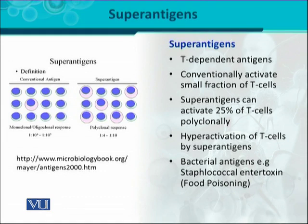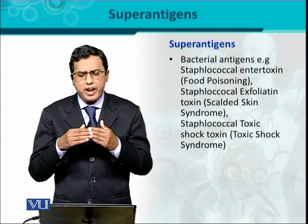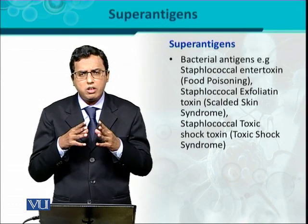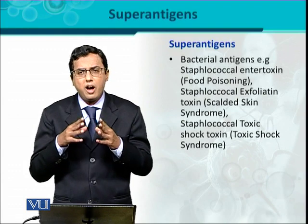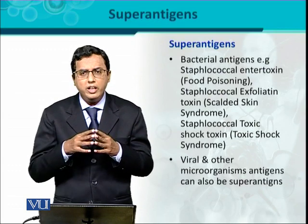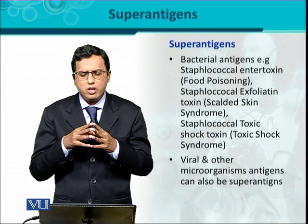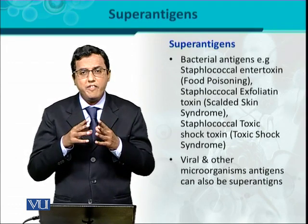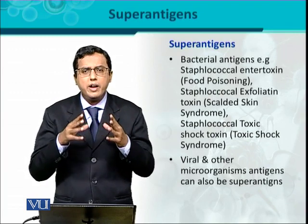Other important examples from Staphylococcus aureus include exfoliating toxins, which cause scalded skin syndrome, and staphylococcal toxic shock toxin, which causes toxic shock syndrome. These are all bacterial toxins that serve as super antigens. Super antigens are not only limited to bacteria — they are also present in certain viruses and other microorganisms. Clinically, super antigens are very important because they activate the immune system in a hyper-activated manner.